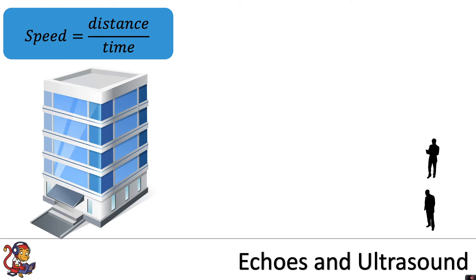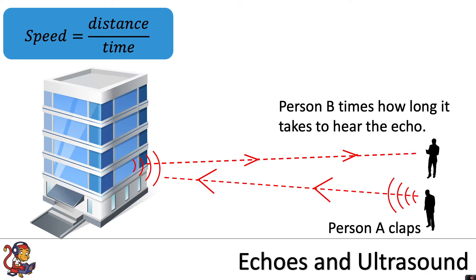Let's look at an example of how we can use that speed equals distance over time equation to measure the speed of sound. We've got two people here on the right. If person A claps, that will produce a sound wave that travels towards the building. The building will absorb some of that sound and also will reflect the sound as an echo. If person B times how long it takes to hear the echo, let's say two seconds, we can use that in our equation to work out the speed of sound.